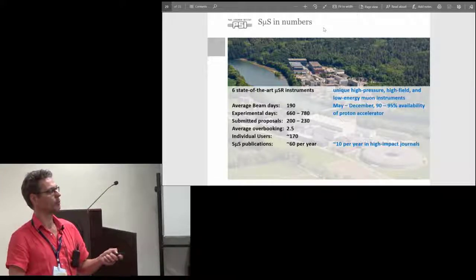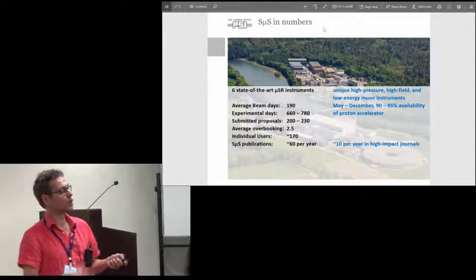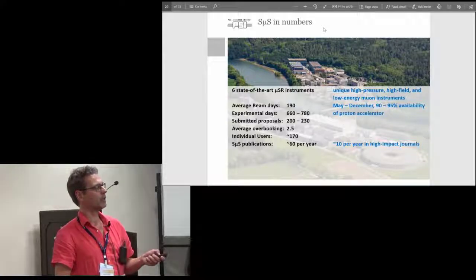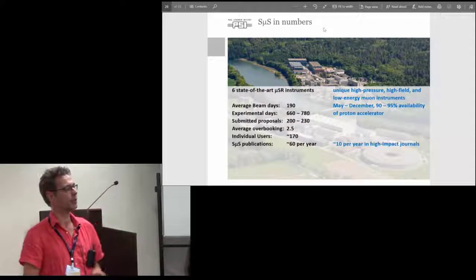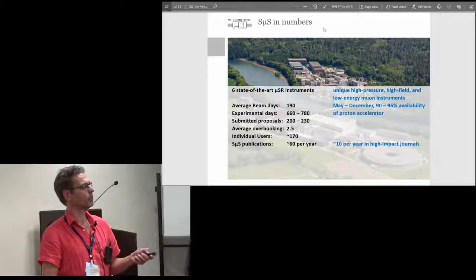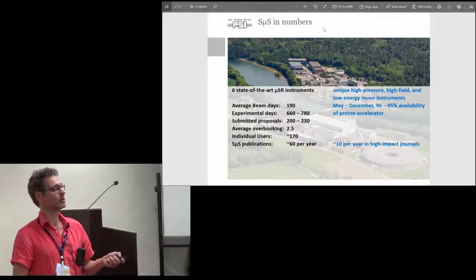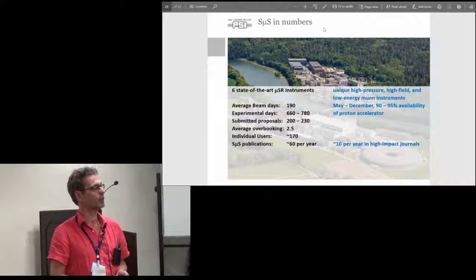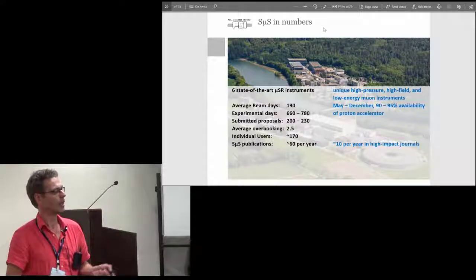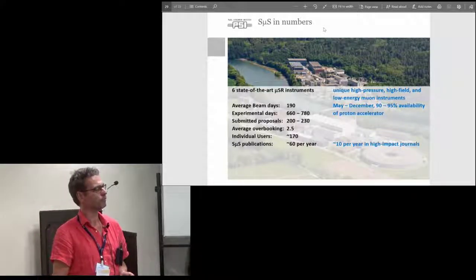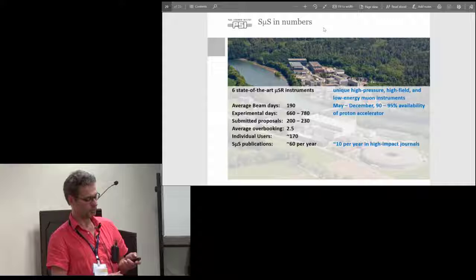Some numbers of the facility. We have six state of the art instruments, three of them are unique: the high pressure, high field, and low energy muon instrument. In a typical year where we have the accelerator running from May to December, we have about 190 beam days with a relatively high availability, 90 to 95 percent of this accelerator, which is very good. These are the instrument days. We have between 200 and 230 proposals submitted every year. There is quite a high overbooking between 2 and 4, so the average is 2.5. In order to get beam time there, you have to have a very good case and write a good proposal. We have some 170 users coming to the facility every year, producing 60 publications and 10 in high impact journals.